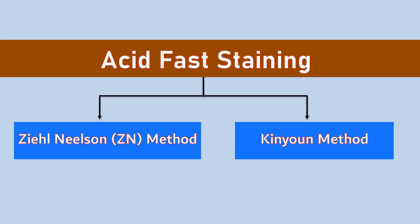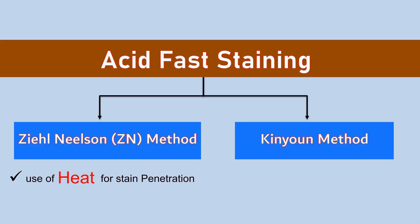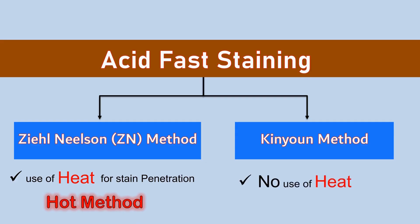The basic difference between these two methods is that in the Ziehl-Neelsen method, during staining, heat is used for stain penetration into bacterial cells. Since heat is used in this method, it is also known as the HOT method. But in the Kinyoun method, there is no use of heat, and therefore this method is known as the COLD method.